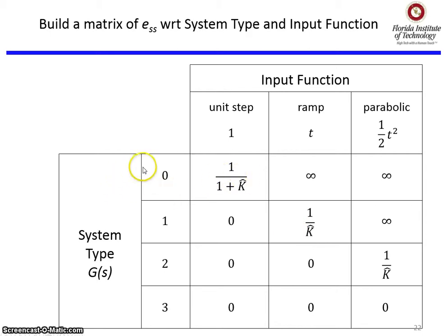The way this table works is the rows are the system type for the baseline system G. System type is how many free s's does G have in the denominator? Type 0, 1, 2, and 3. Over in this part of the table is the input function, the unit step, the ramp, or the parabolic, and I've put the functions here in time, but remember we also have the corollary Laplace functions for the step, the ramp, and the parabolic input.